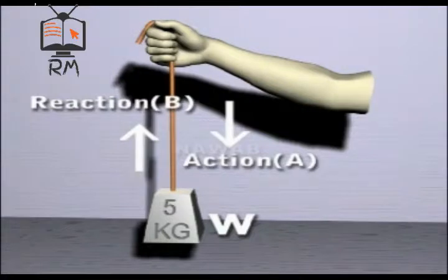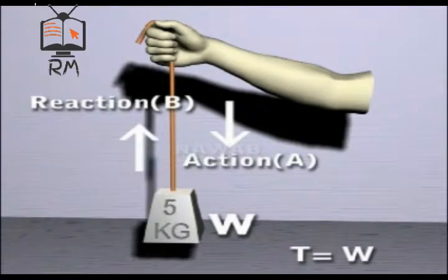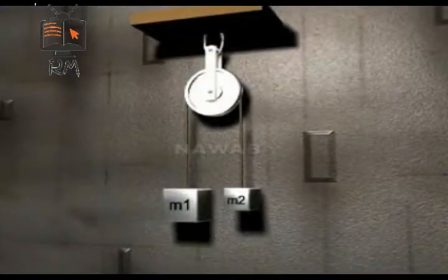That force which is exerted by the string on the body or on the hand is called the tension in the string, and it is usually denoted by T. Remember that T is directed upward at point A and downward at point B. If the object is at rest, the magnitude of tension is equal to that of weight: T = W.